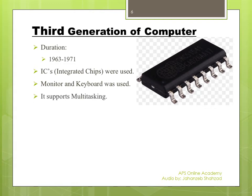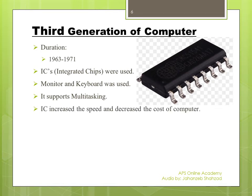Third generation computers supported multitasking, meaning the user was able to do many tasks at the same time — able to open multiple programs simultaneously. In previous generations the user was not able to open more than one program at a time. IC chips increased speed and decreased the size of the computer because one IC chip contains many transistors in a single chip.